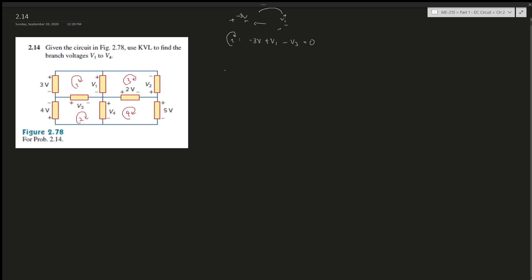Loop 4 looks promising. It's negative v4 plus 2v and plus 5v gives us zero. In this case, v4 should give us 7v.